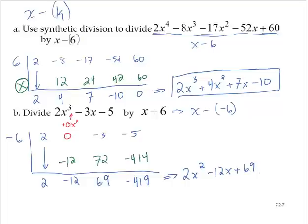Now in this case, we have a remainder of negative 419. So just like with long division, I would write minus 419 over x plus 6.